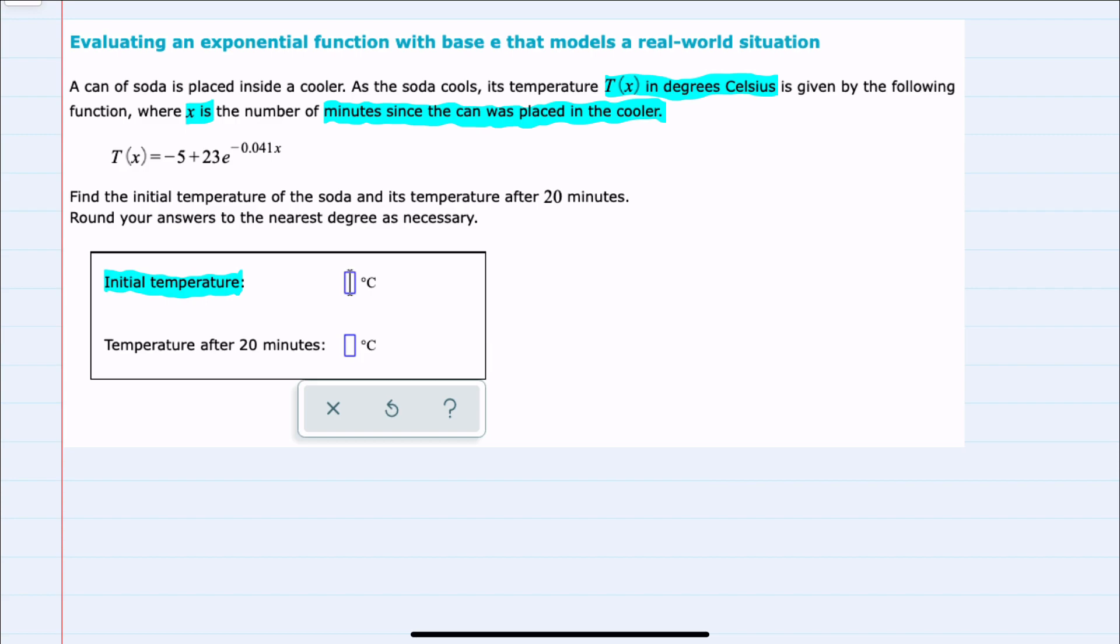First, the initial temperature. That would be where x equals 0, so it's the moment the can is placed in the cooler.